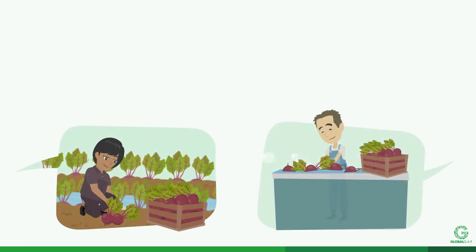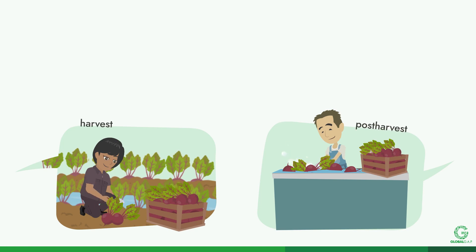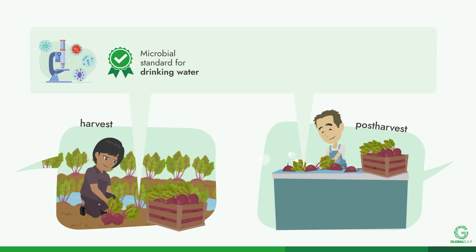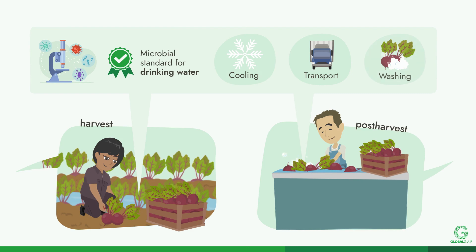Water that comes into contact with fresh fruit and vegetable products during harvest and post-harvest must meet the microbial standard for drinking water. This includes ice and water used for cooling, transport, and washing.